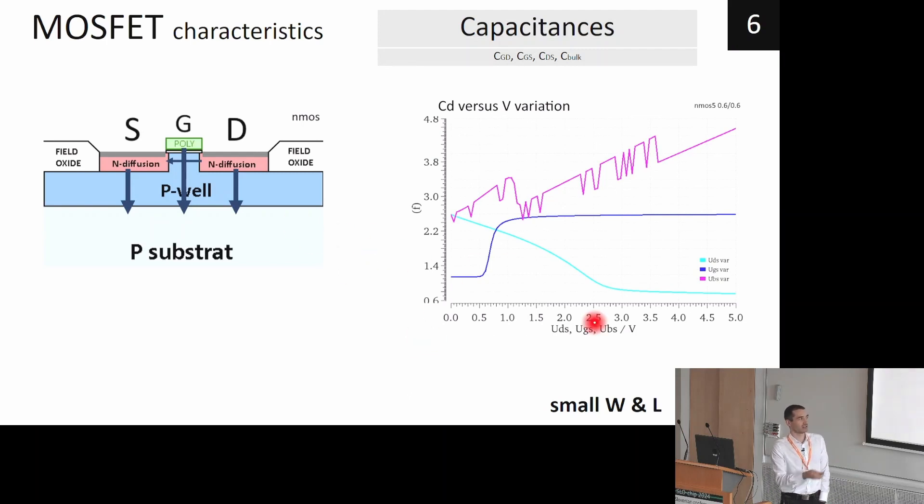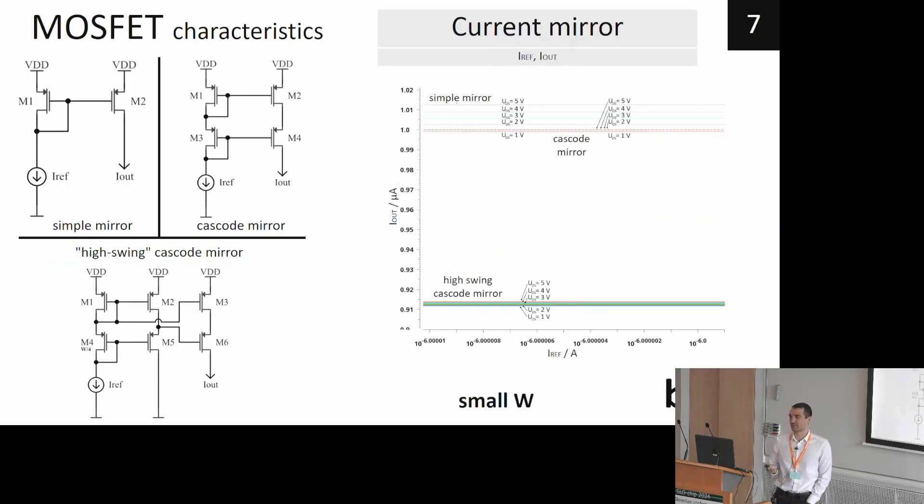The last important characteristic is current mirroring capability. We found out that the best mirroring capability is offered by a basic cascode mirror, and so we strive to use the cascode mirrors in our design.